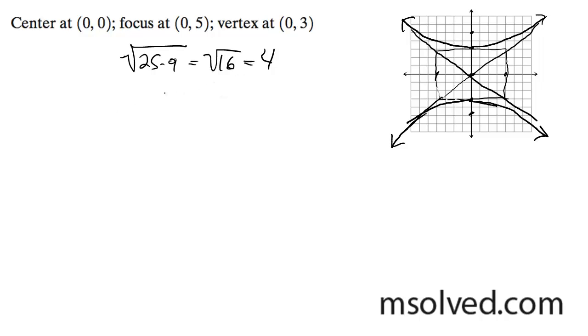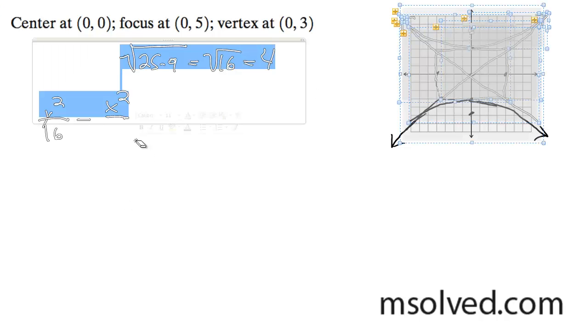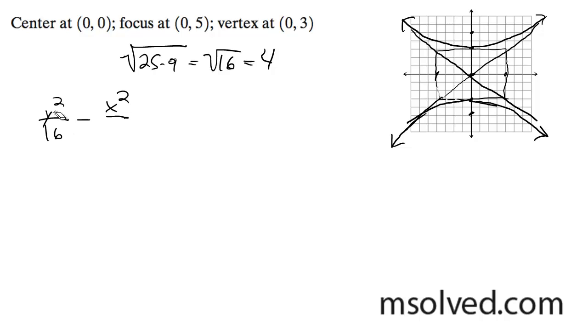So the equation is going to be, I'm writing with respect to y, y squared over 16 minus x squared over... oops, I messed up here. The graph's right, but I got these mixed.